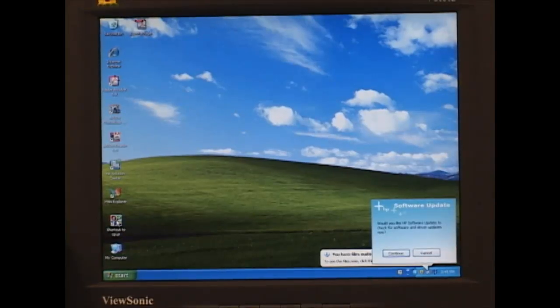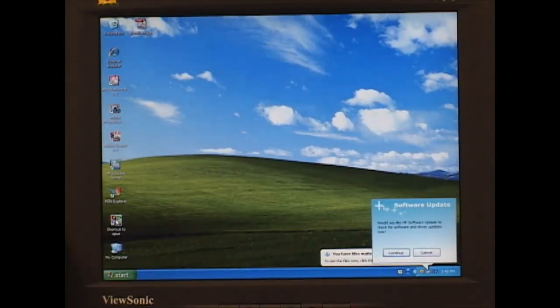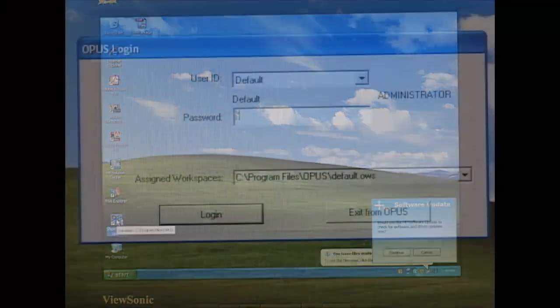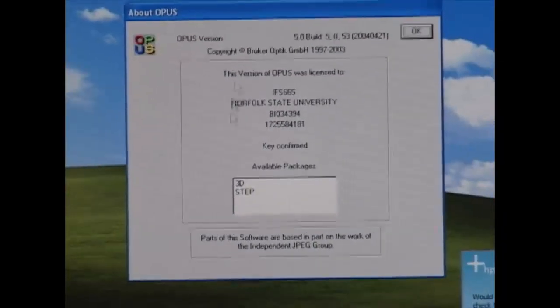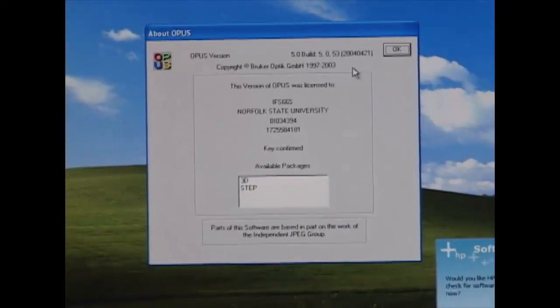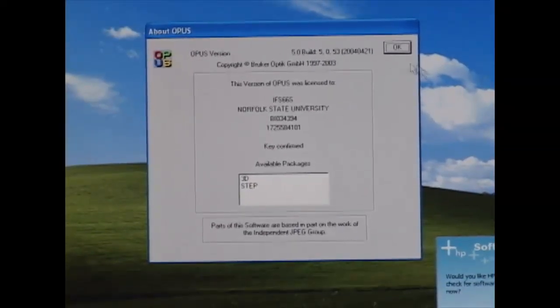In order to bring up the software we use for FTIR, we're going to click on the Opus icon and enter the password. The first window that pops up is About Opus, so we click OK.